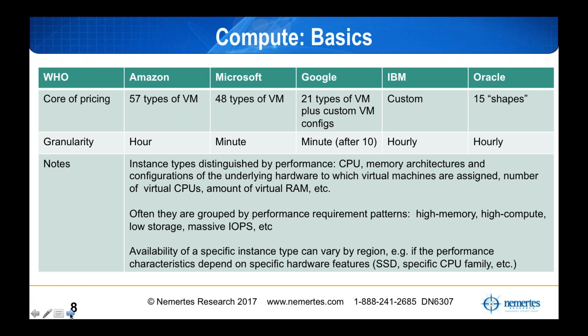IBM and Oracle also have Amazon-style hourly billing granularity, unless you've negotiated something separate. Instances can also be distinguished by performance — CPU, memory, architectures, and configurations can differ. Providers group them by performance requirement patterns: high memory, high compute, low storage, or massive I/O workloads. Most importantly, the availability of a specific instance type can vary by region. For example, a high-performance computing type might not be available in US East or US Central, and region has to do with latency, which affects performance.